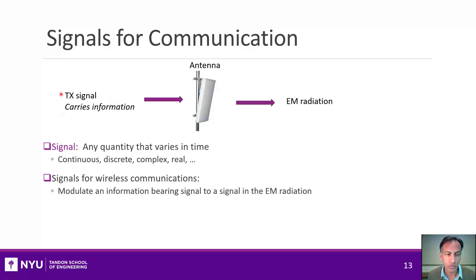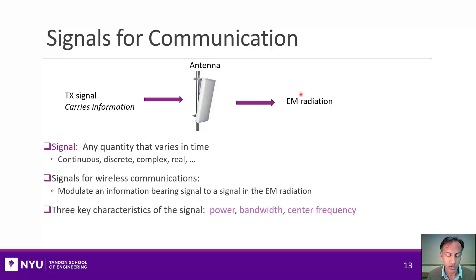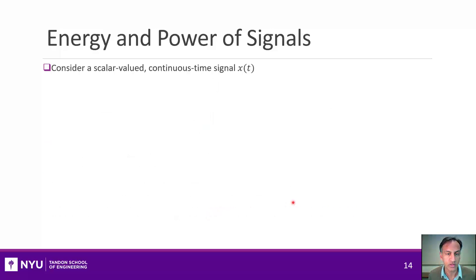For example, we might have a transmit signal that carries information and is then modulated through an antenna to create electromagnetic radiation. Both of these are signals in different forms — the original information signal and the time-varying electromagnetic field. I want to quickly review three characteristics of signals that will be important: the power, the bandwidth, and its center frequency.